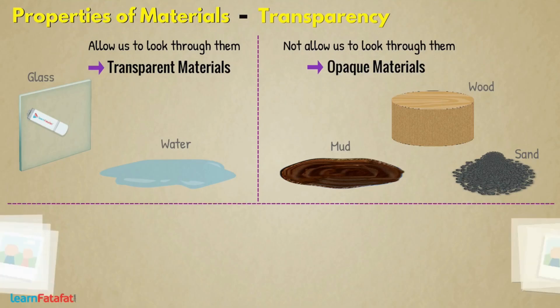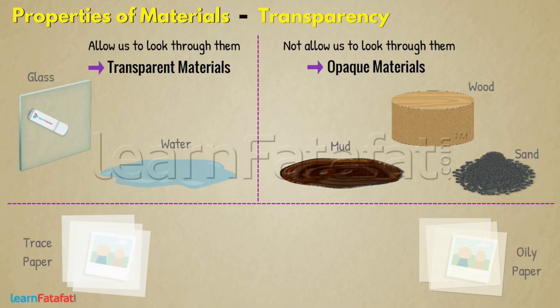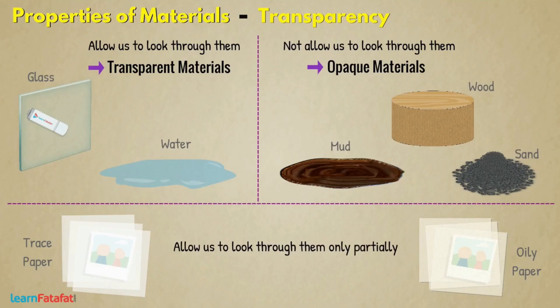There are some materials, for example, trace paper, oily paper, etc. which allow us to look through them only partially. Such materials are called translucent materials.